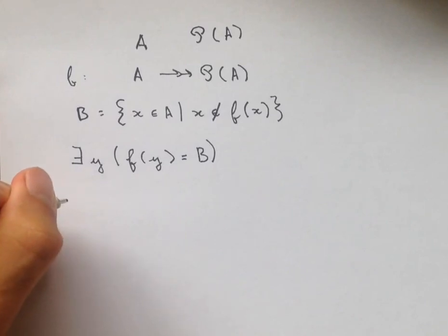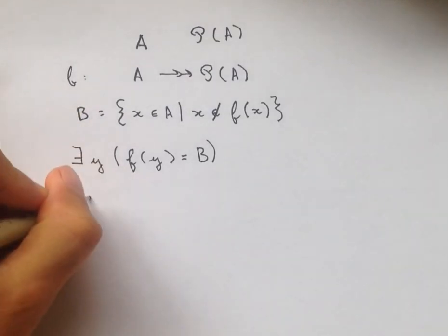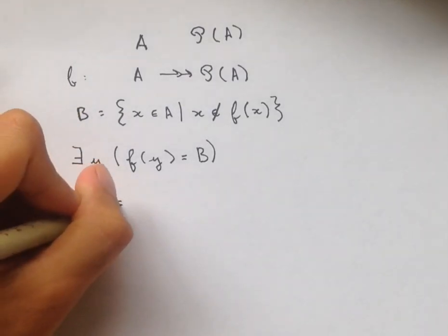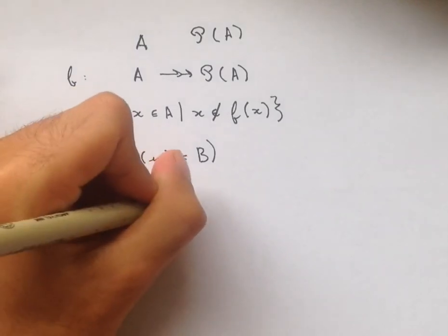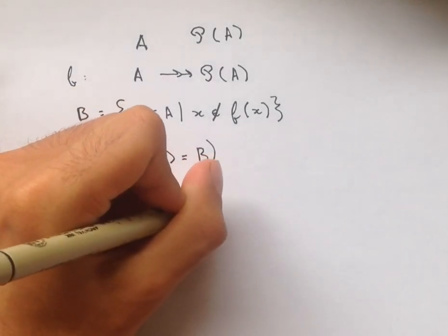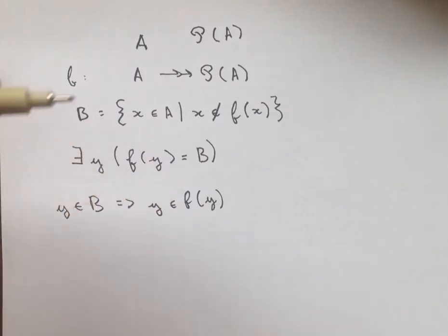And so now the question is, is Y an element of B? And this is how we're going to get our contradiction. So we're going to start by assuming that Y is in fact an element of B. And then that means that Y is an element of F of Y because B is F of Y.